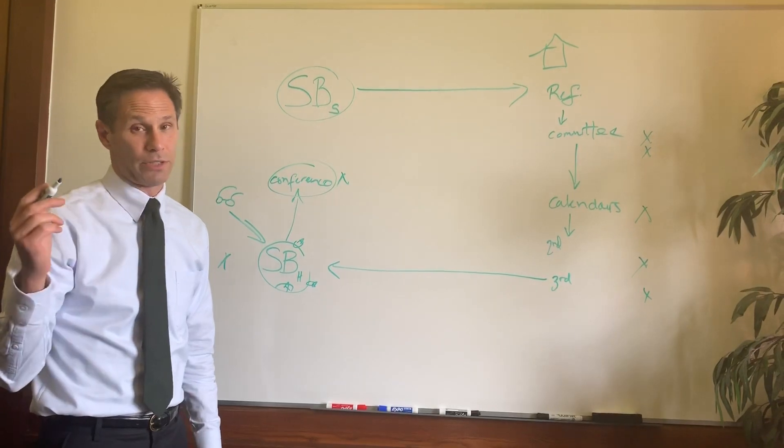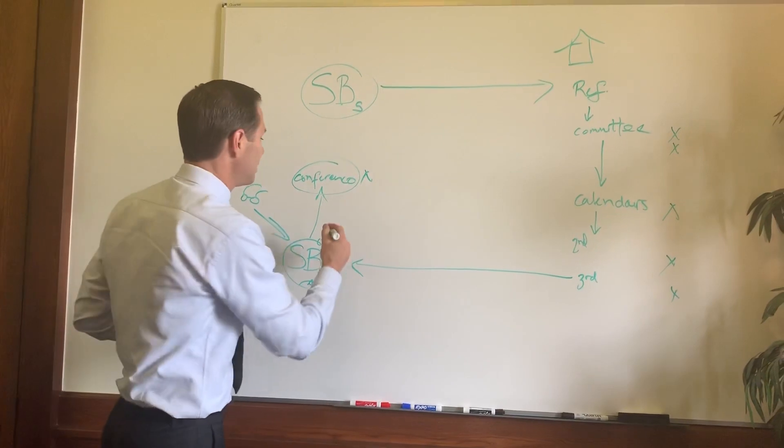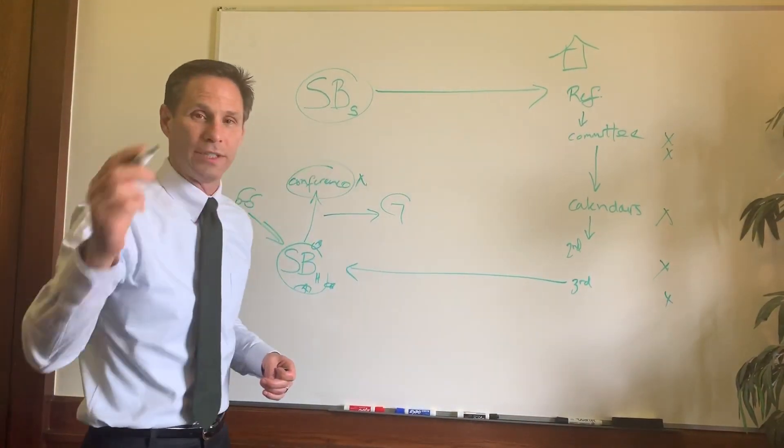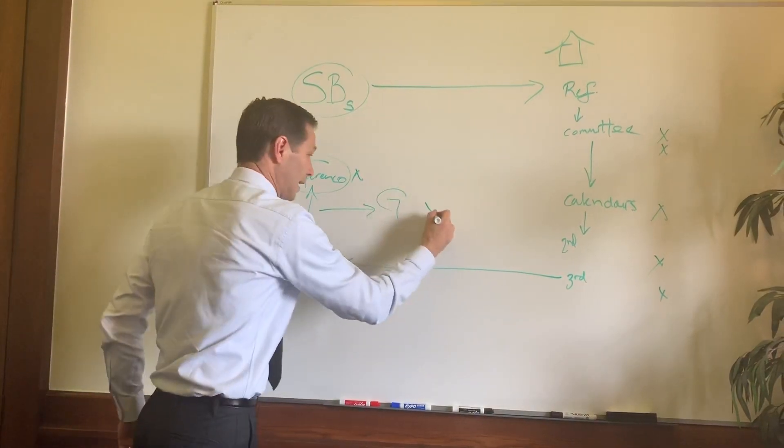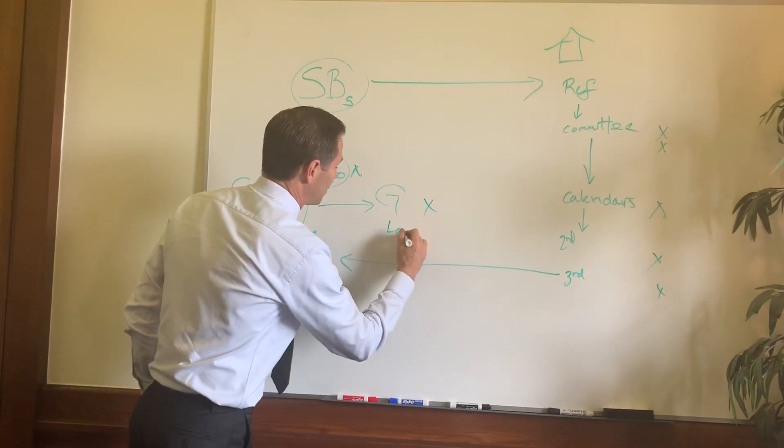But if we do come to an agreement, and I say, okay, this is good. I can live with this. I like this. I might even like it better. I then send it to the governor. And the governor either likes it or if he doesn't. And if he doesn't, it dies. And if he does, it becomes a law.